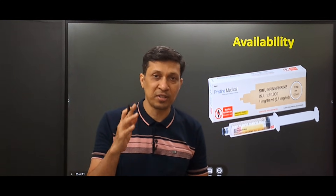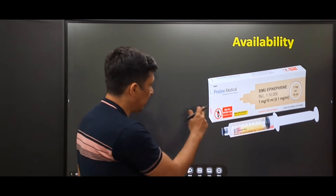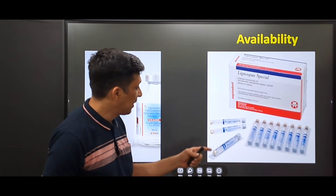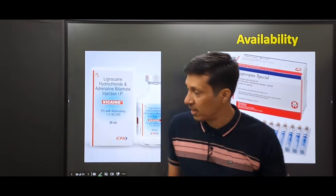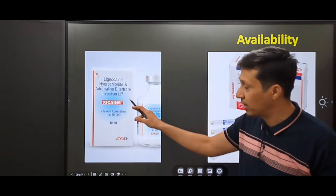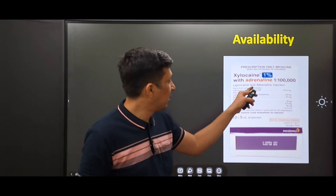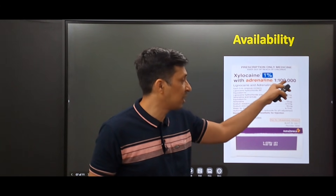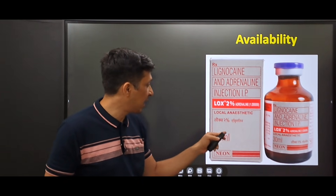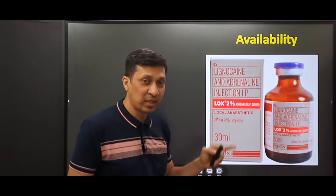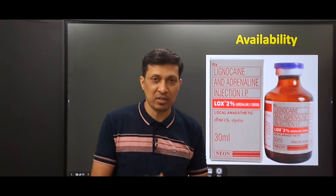These different dilutions are also available in the market. This is a pre-filled syringe of one in ten thousand epinephrine. These are also pre-filled syringes of one in eighty thousand concentration used for dental anesthesia. Similarly, one in eighty thousand adrenaline with lignocaine is also present as a vial. Here a lignocaine-adrenaline injection is present with adrenaline concentration of one in one lakh. And another preparation has lignocaine-adrenaline with concentration of one in two lakh.